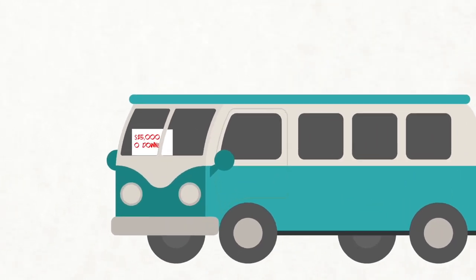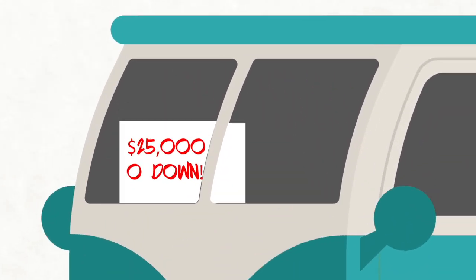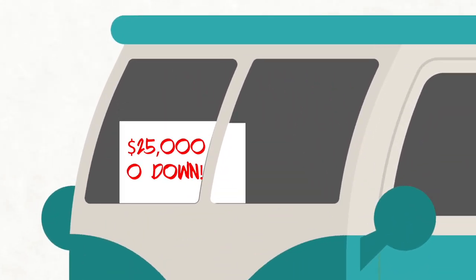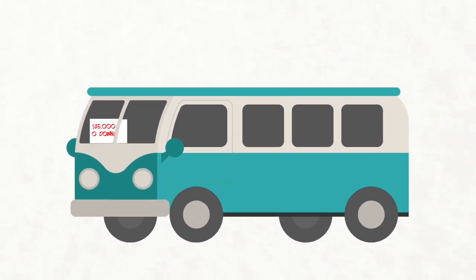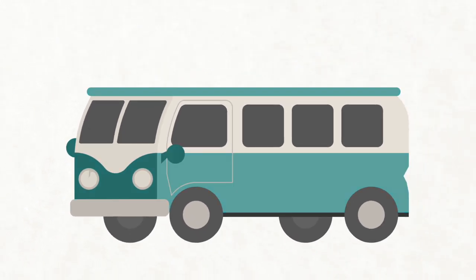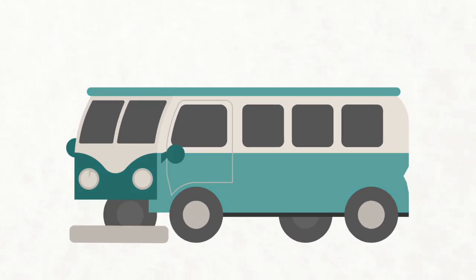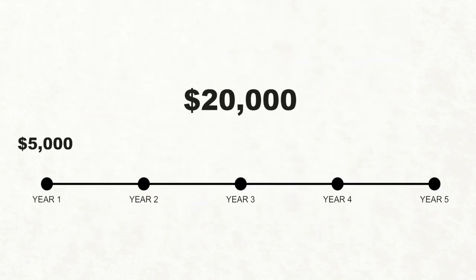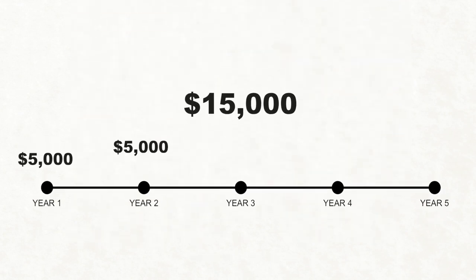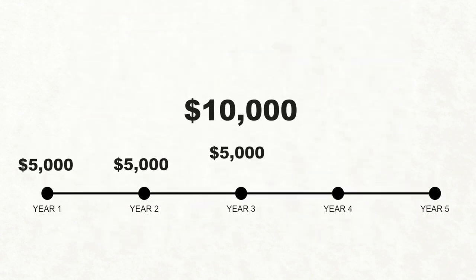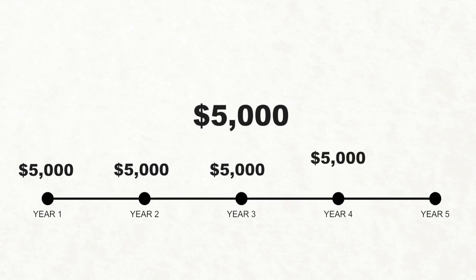But in accounting, you now have an asset worth $25,000. It will last the next five years, losing value as it gets older, needs repair, or becomes obsolete. In accounting, the $25,000 is spread out over the useful life of that van. This is called depreciation.